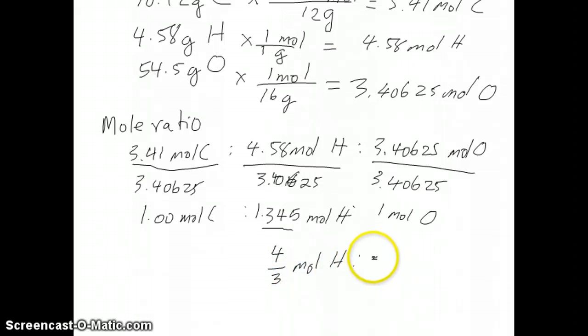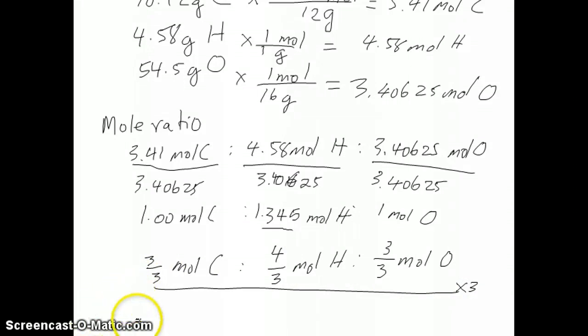If you then write all of these in terms of fractions of 3, one is just 3 over 3, and the same thing with this carbon right here is 3 over 3 moles of carbon. So then what you can do is to get rid of all the threes, you just multiply across by 3. And so in the end, what you have is 3 moles of carbon to 4 moles of hydrogen to 3 moles of oxygen.